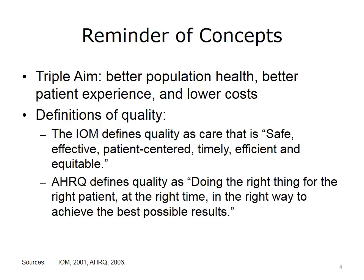Overuse means that a patient gets services that don't provide a benefit, or where the harm is greater than the benefit. An example of overuse would be a patient getting a prescription for an antibiotic when the patient has a cold, or a patient getting a test repeated because the physician didn't have the results from the earlier test. Underuse means a patient doesn't get care that is needed — for example, if a patient didn't get needed physical therapy. And misuse means that a patient gets the wrong care, for example, if there is an error and a patient is prescribed the wrong medication.